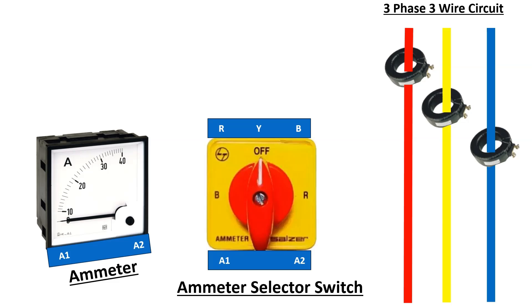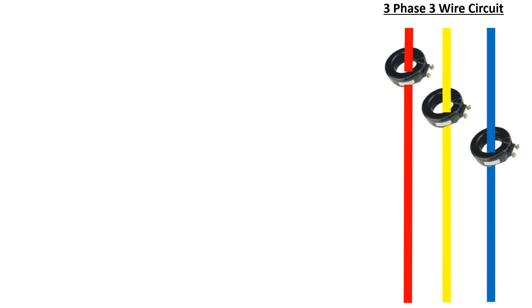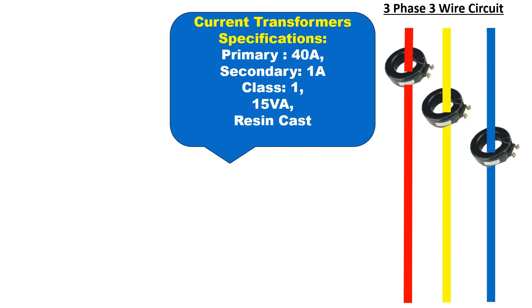The ammeter selector switch allows you to monitor the current in each of the three phases separately. I want to know how to connect the ammeter and ammeter selector switch in a three-phase three-wire busbar to measure the current. In an electrical switchgear, a three-phase three-wire busbar arrangement will be like this.